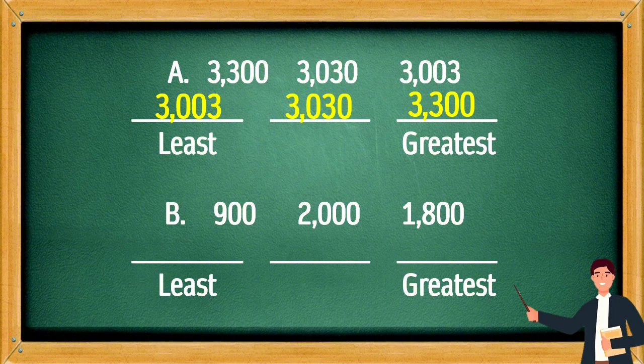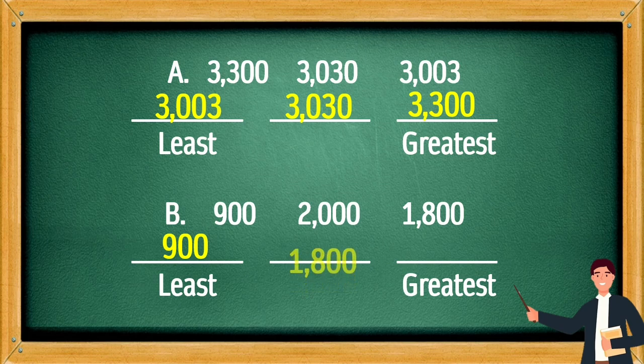Second set: arrange 4,030, 1,800, and 2,000 from least to greatest. The least is 1,800, next is 2,000, and the greatest is 4,030.